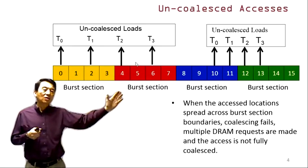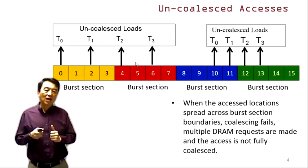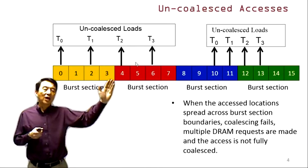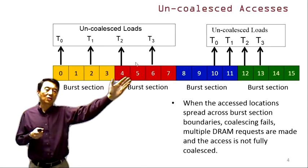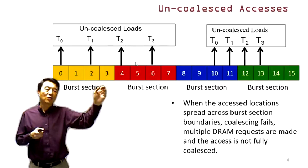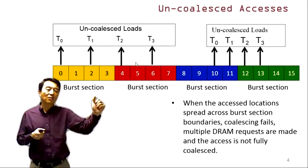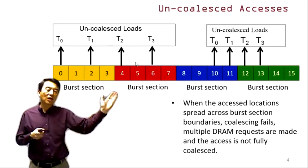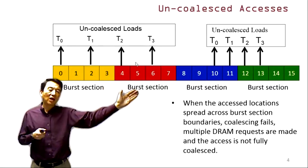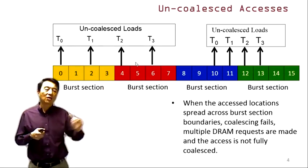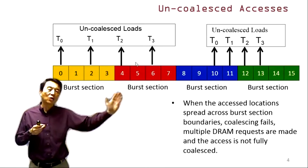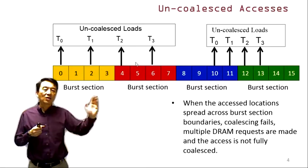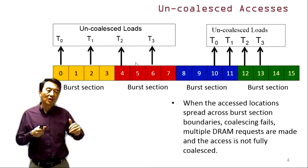There is another situation where uncoalesced access can happen: if threads access consecutive locations but the first location accessed by the threads in the warp does not start from the beginning of a burst section. In this case thread zero accesses a location halfway into the burst section, causing the locations touched by all threads to span across multiple burst sections, also leading to uncoalesced accesses.